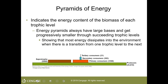A pyramid of energy displays the energy content of the biomass at each trophic level, typically in kilocalories per square meter per year. It is common for ecologists to measure energy content by burning a sample of tissue in a calorimeter — the heat released during combustion is measured to determine the energy content of the organic material in the sample.